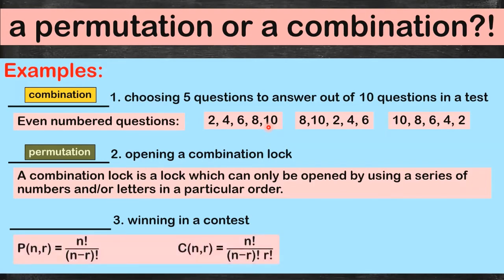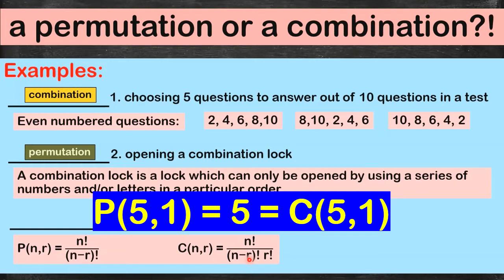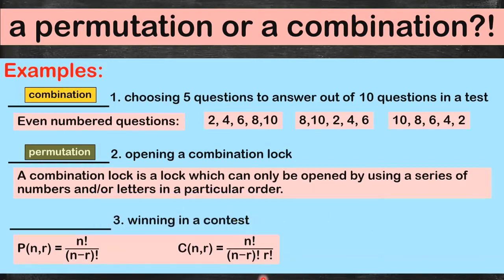Let's look at the formulas. If you consider n equals five contestants with r equals one winner and substitute into both the permutation and combination formulas, they give you the same value. So when there is only one winner, it can be either a permutation or a combination — it depends on the context.